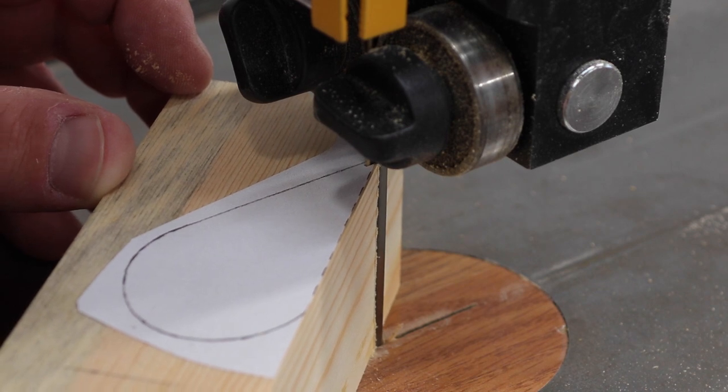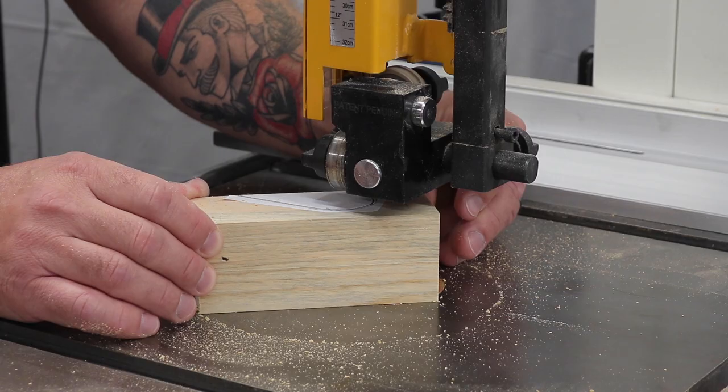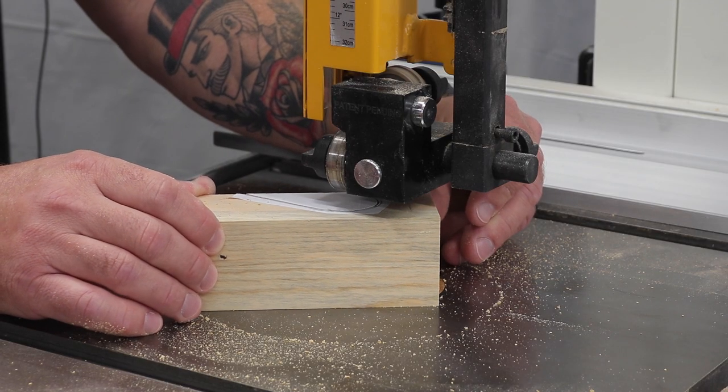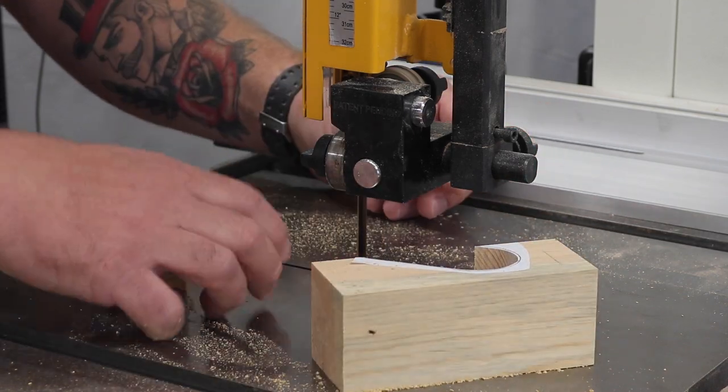Over on the bandsaw I would cut out each half heart. You could also do this with a jigsaw if you're careful. This radius does get a little tight but since I have a bandsaw I think that's probably the best tool for the job in this particular situation.